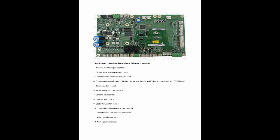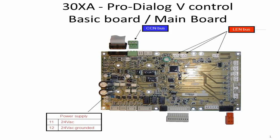9. Cooler Flow Switch Control, 10. Connection and Reporting to BMS System, 11. Panel Internal Temperature Protection, 12. Alarm Signal Generation, 13. Alert Signal Generation. This slide shows the connection of 24-volt AC power supply for the main board at Channel 11 on the baseboard, and the CCN bus connection shown in the green connector on the right top of the board.